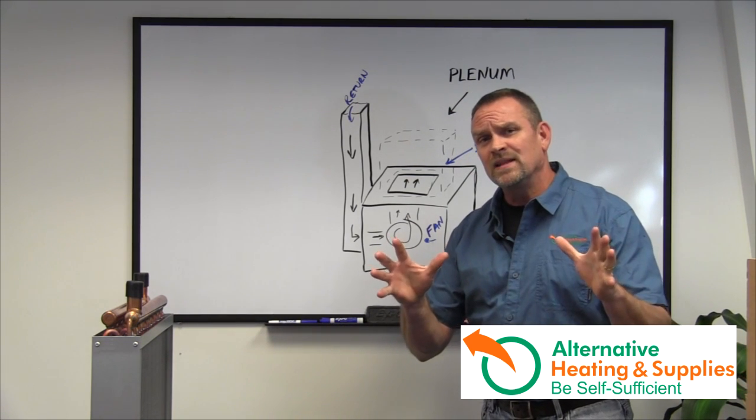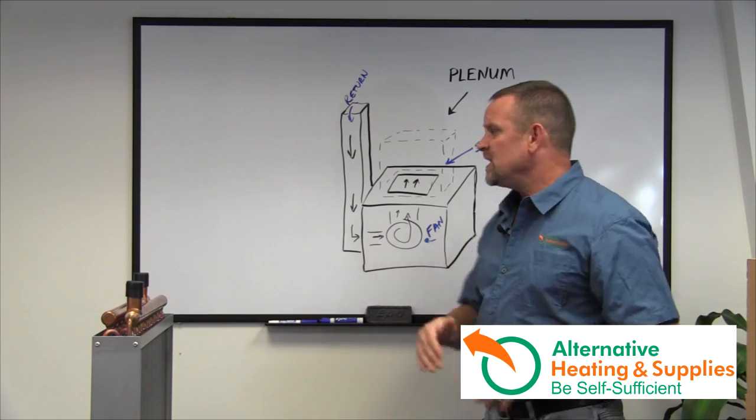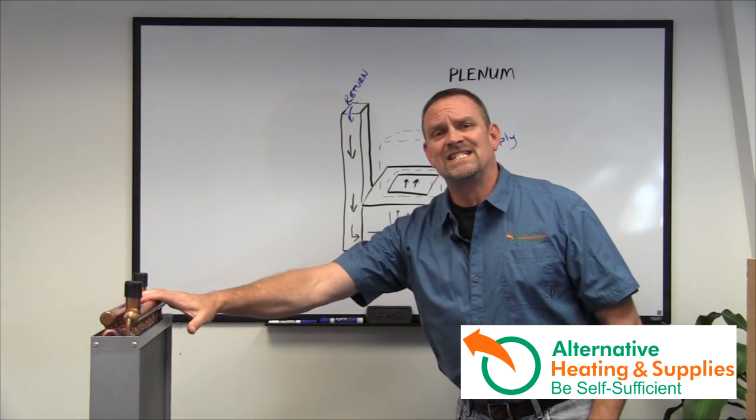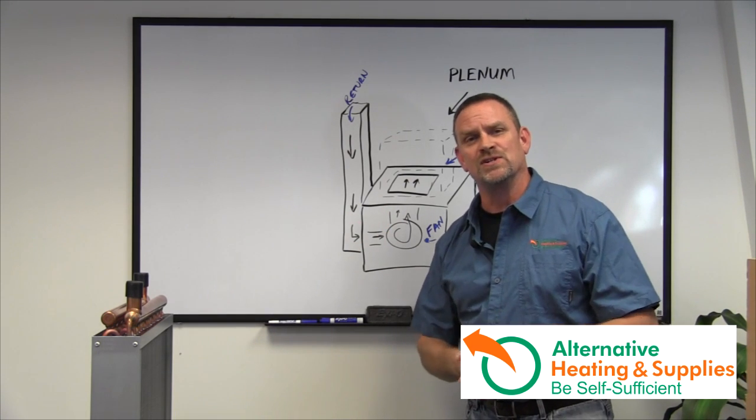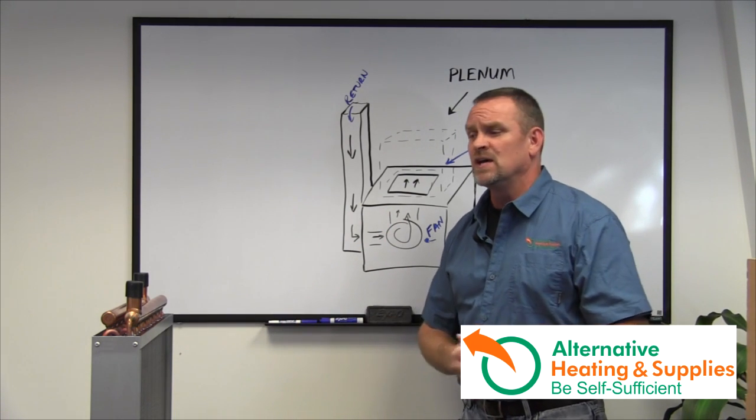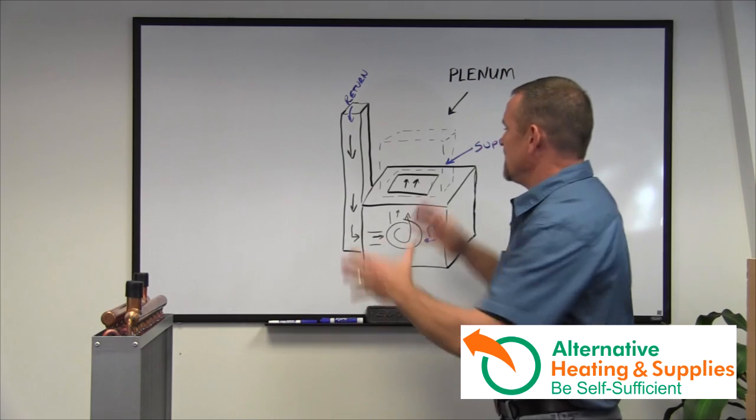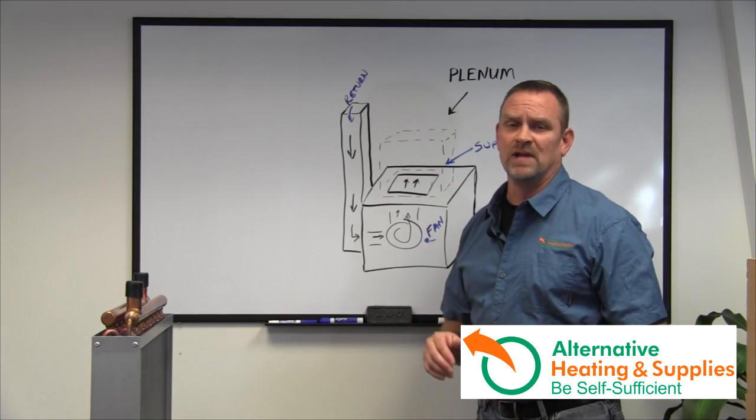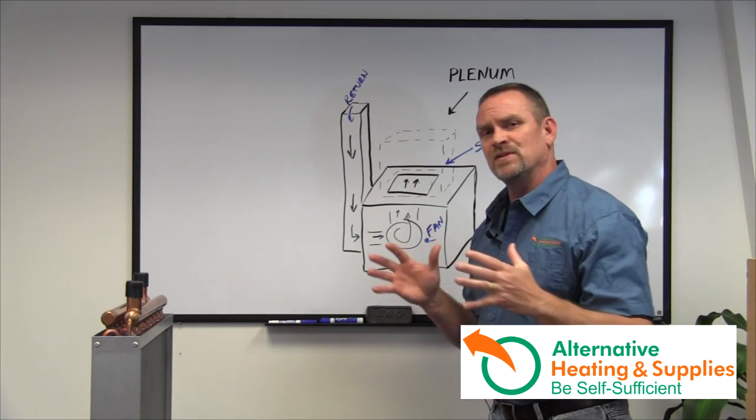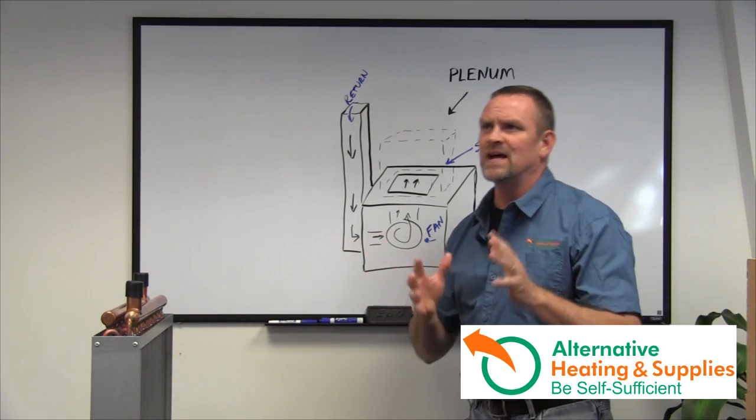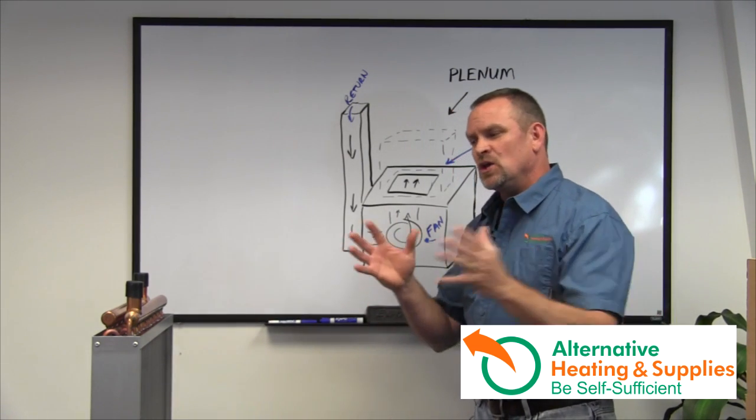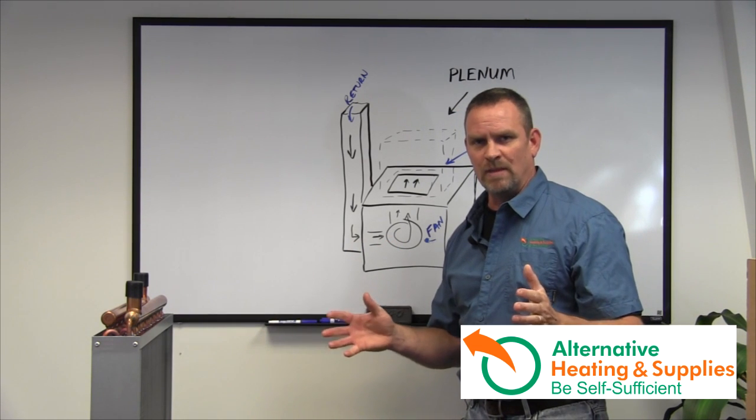And then one more thing that a lot of people ask me about is, does this generate resistance on the fan? Does that slow down the airflow through my house? The answer to that question is simply, yes, it sure does. So you want to find a heat exchanger that is going to maximize the size of your plenum so you get the least amount of resistance. Now, if you 99% of the time, you do not have a resistance problem once you install them.